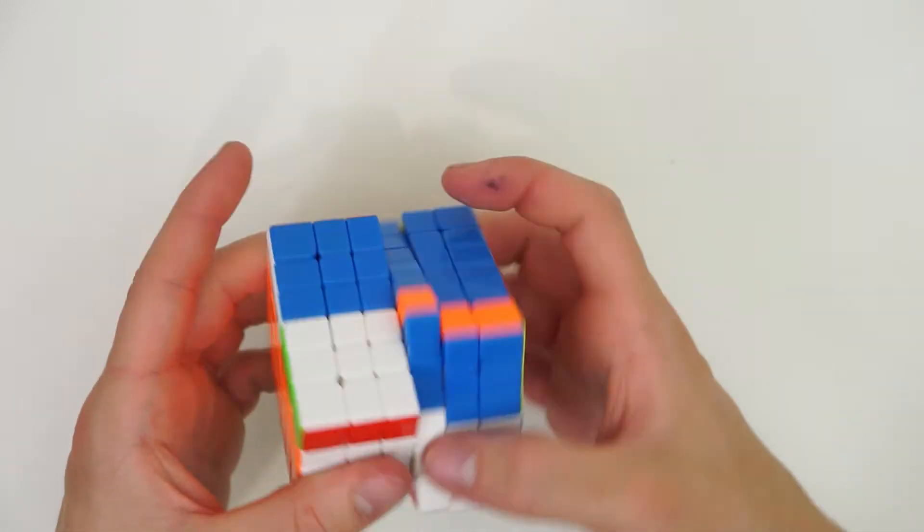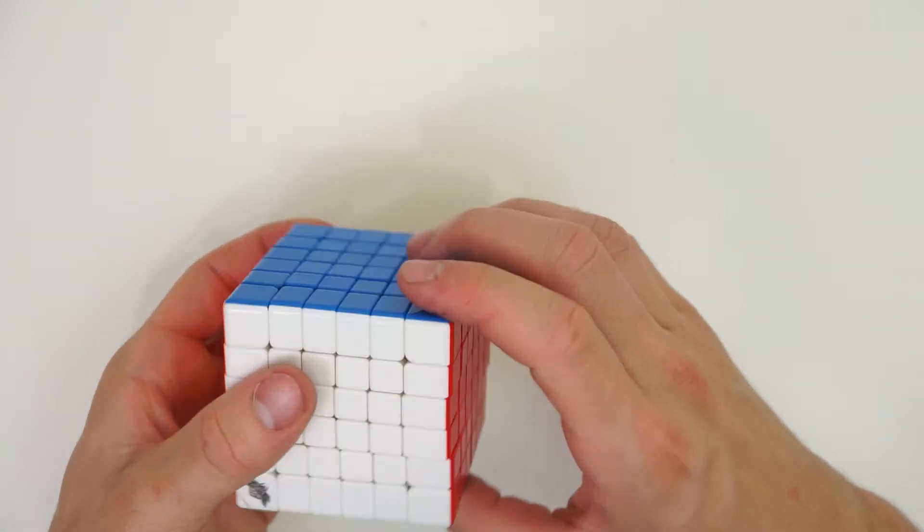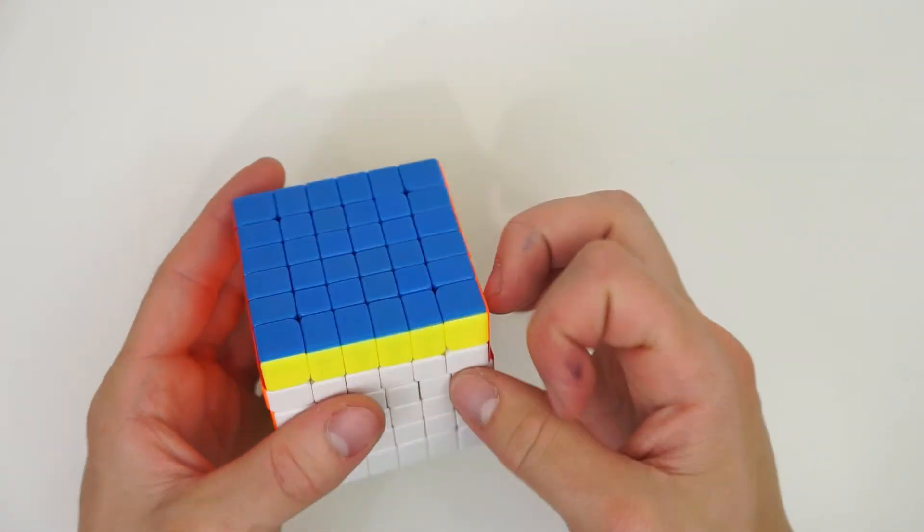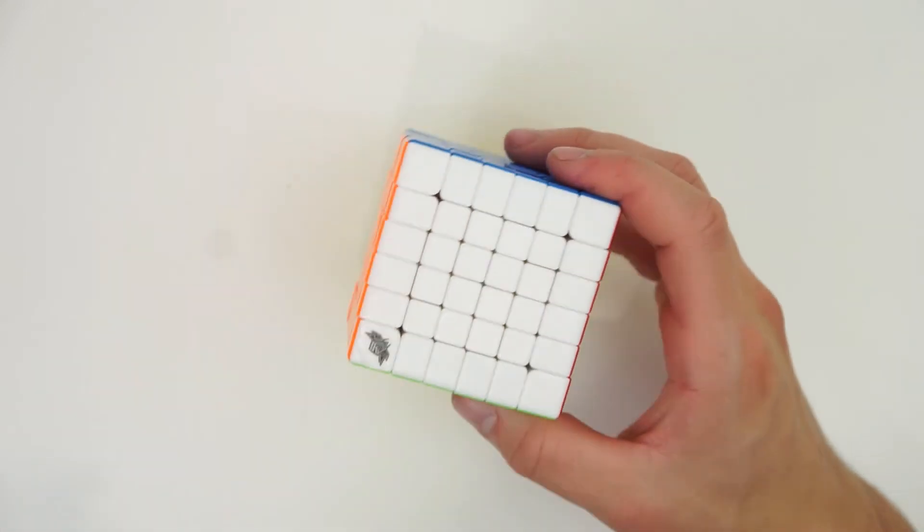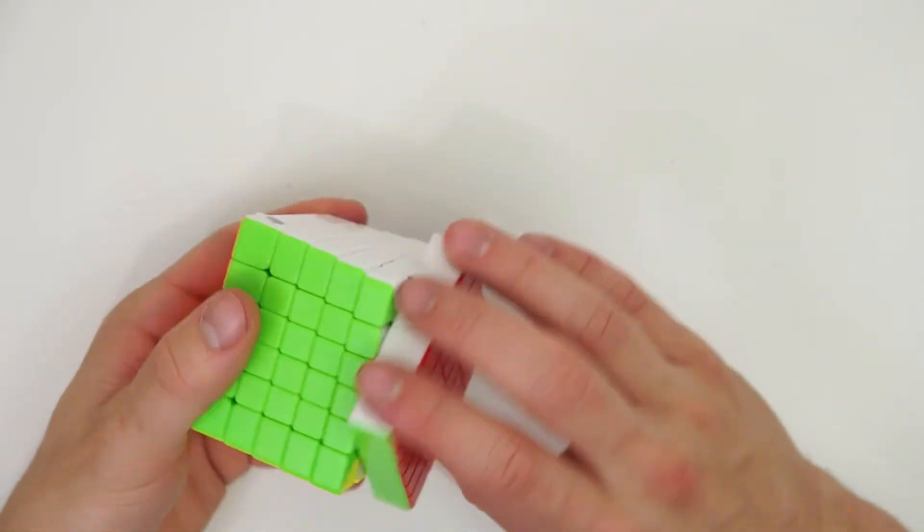You know how on an old 4x4, when you turn it, you can feel all those internals moving? That's what this feels like. But everything's fast. The outside layers are nice and fast. It's pretty smooth. This puzzle could potentially be very interesting.